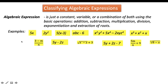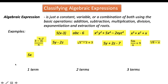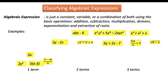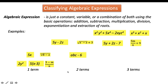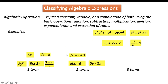These are some examples of an algebraic expression, and they can be classified according to the number of terms. 5x, 2y squared, 5 times quantity x minus 3, 3 minus m all over n, and cube root of 8 minus x are all considered as algebraic expressions with one term. While abc minus 6, 5y minus 2z, square root of x minus z plus 3, and 5m over n plus 9 are algebraic expressions with two terms.